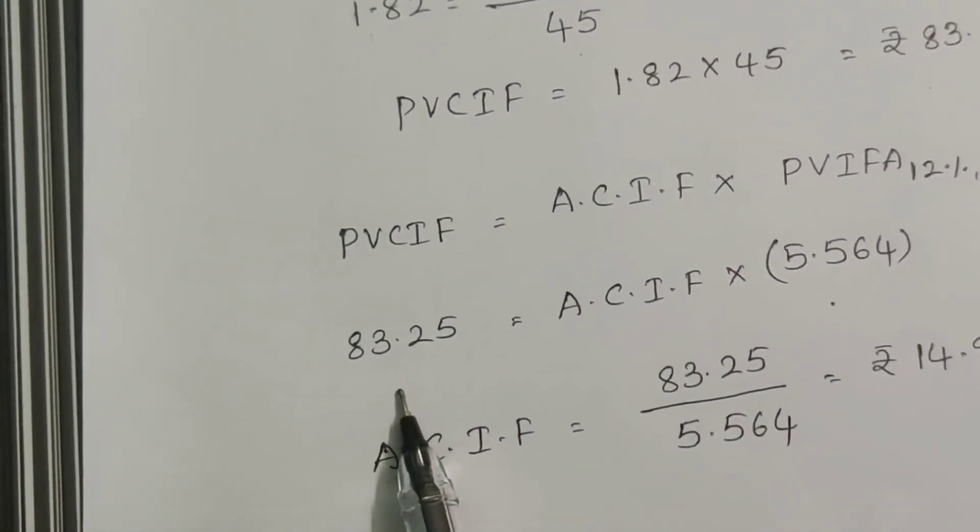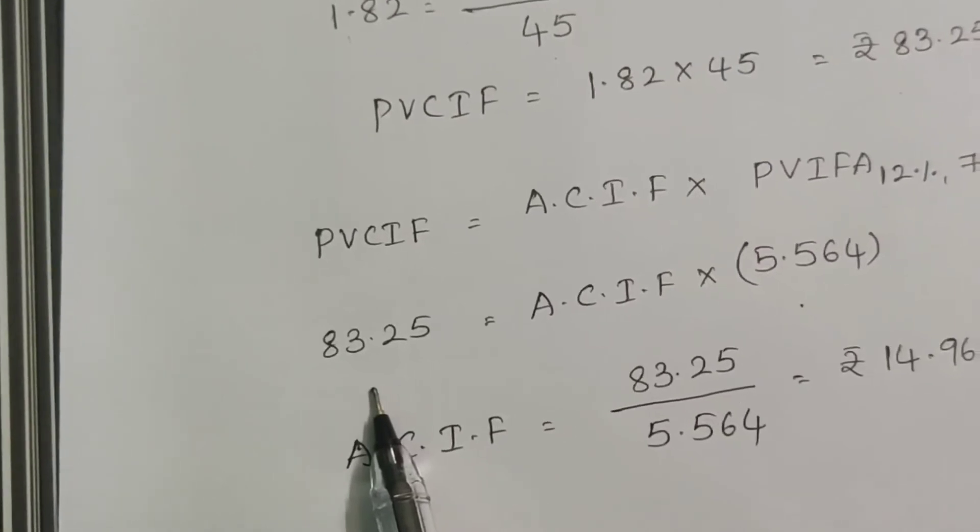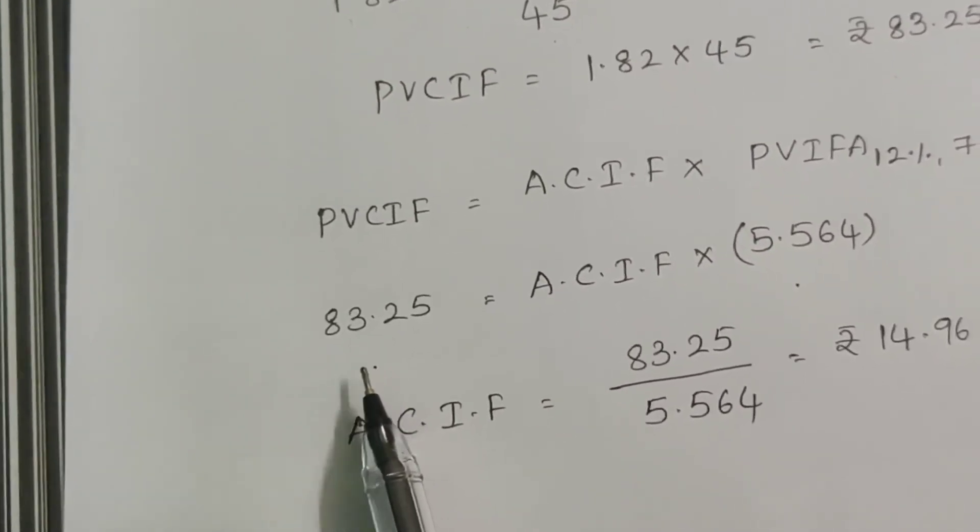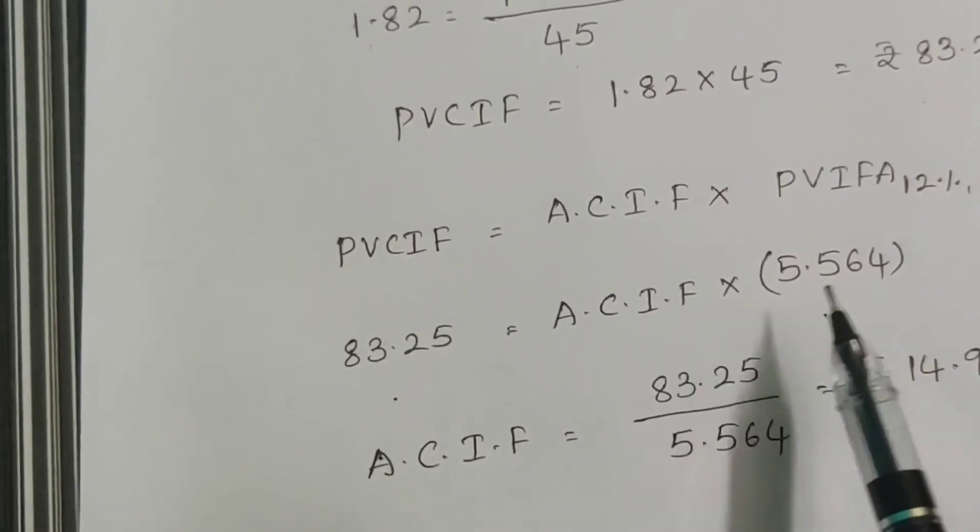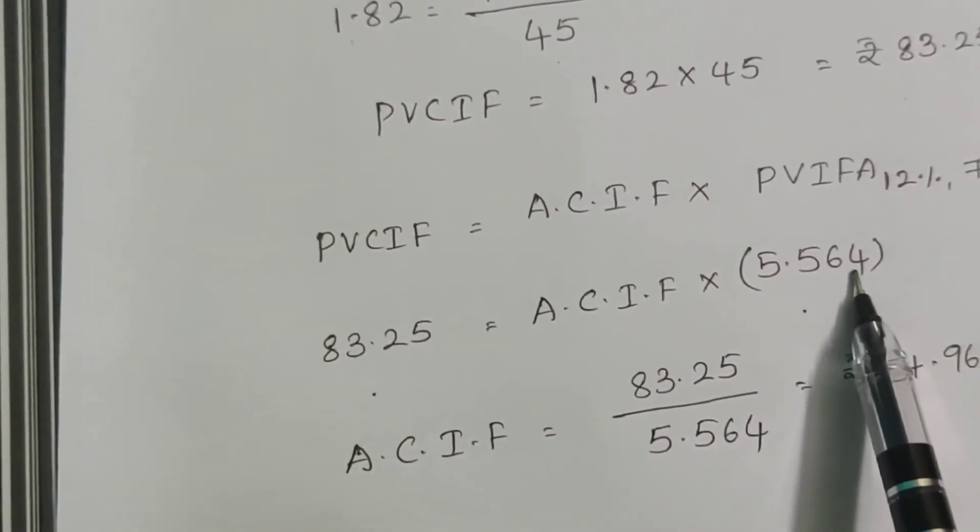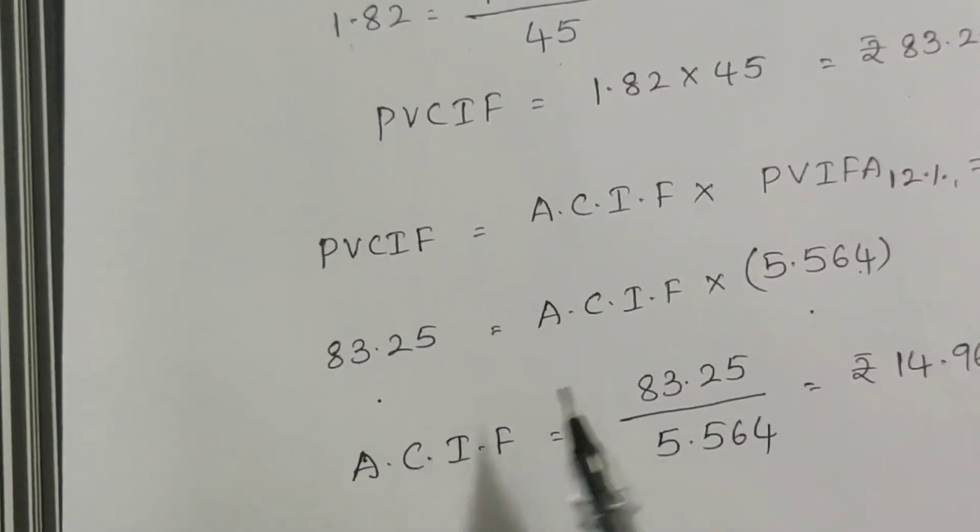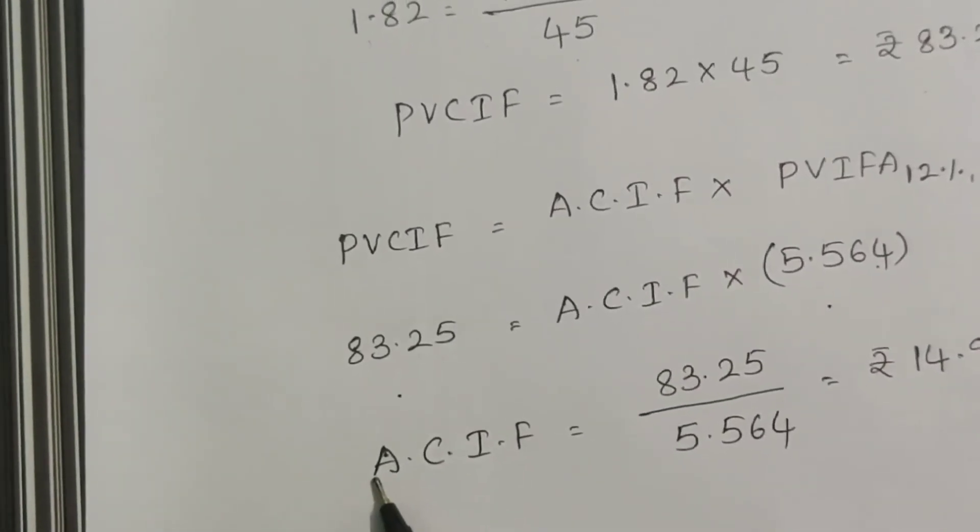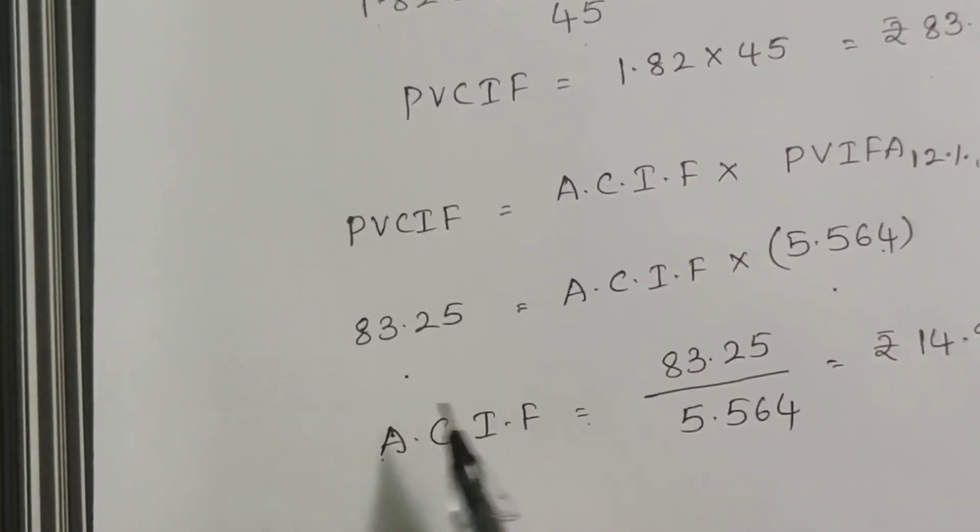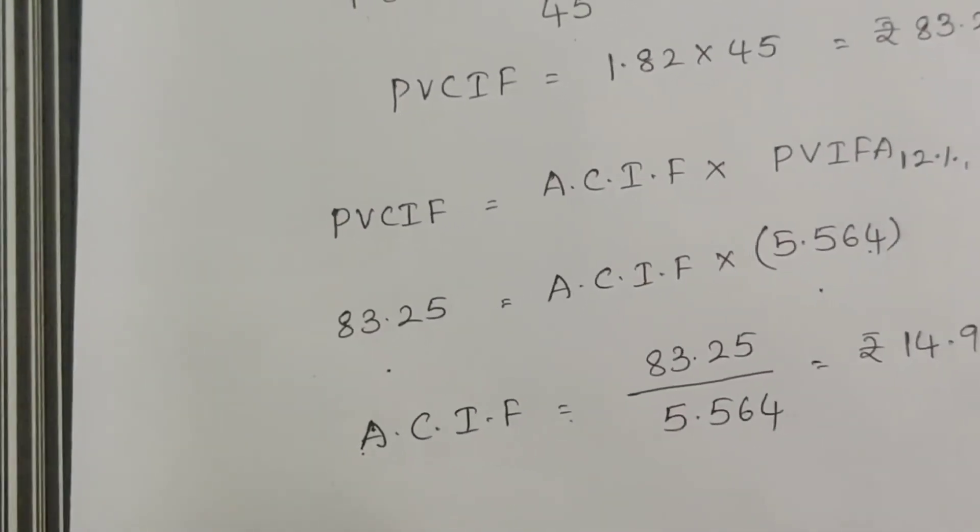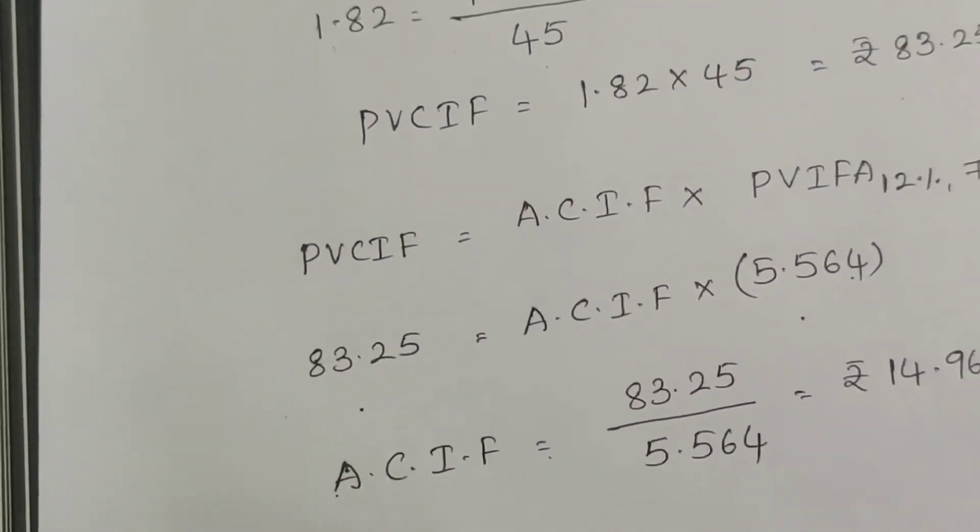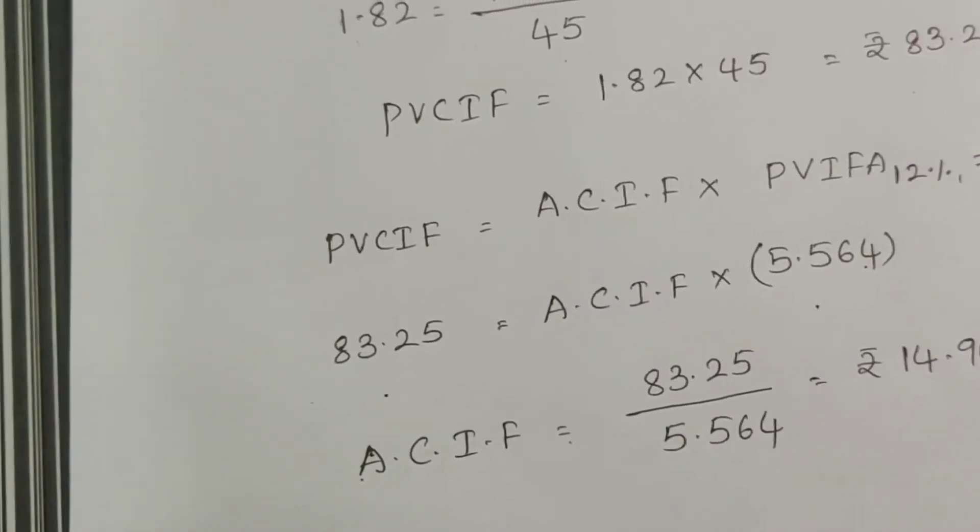So calculated value of PVCIF is 83.25 lakhs, which equals annual cash inflows into PVIFA. By substituting them, annual cash inflow equals 83.25 divided by 5.564, which equals 14.96 lakhs.